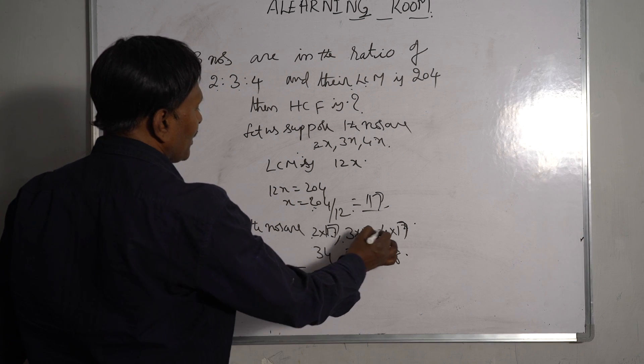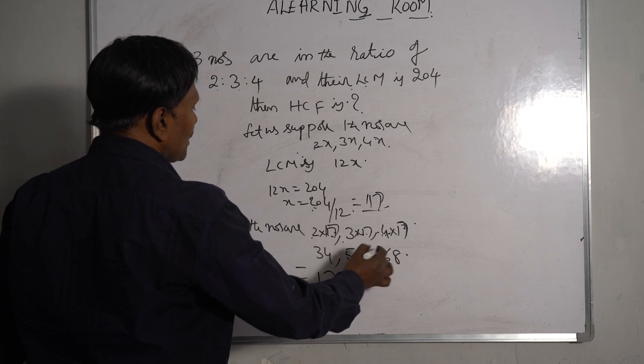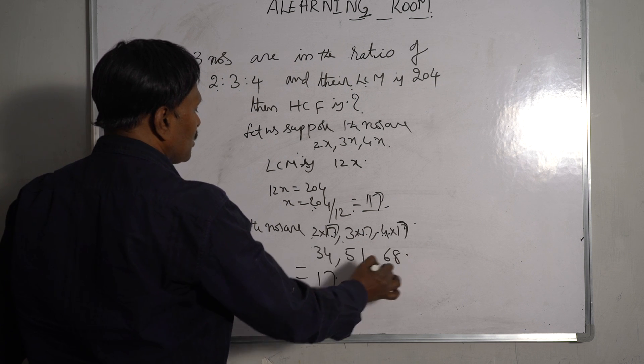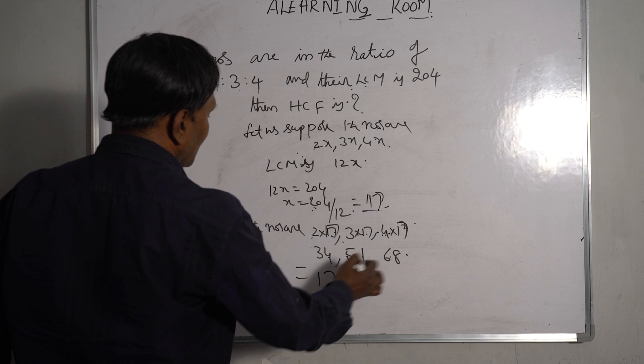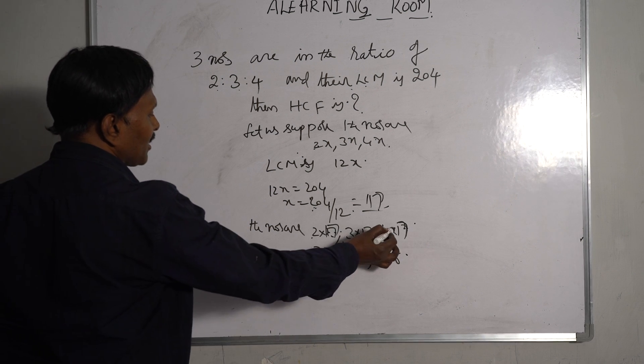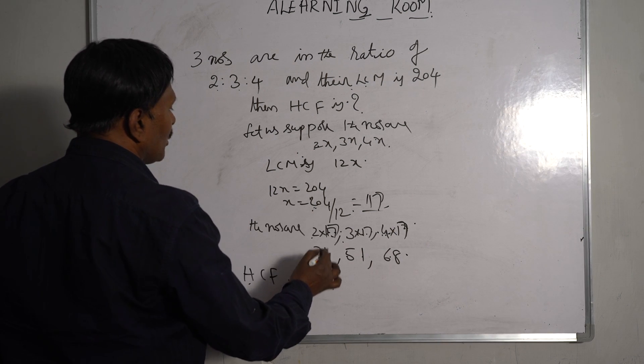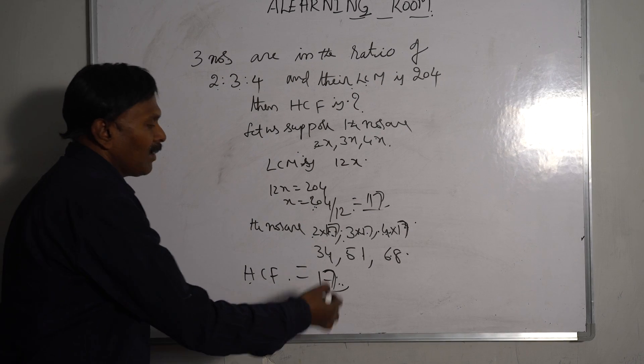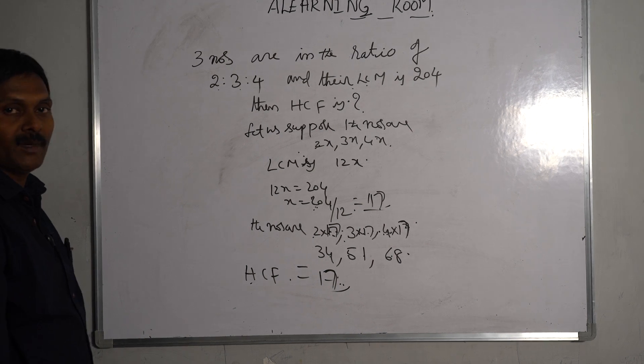These are multiples of 17. The highest common number which divides 34, 51, and 68 is 17. So the HCF of these numbers is 17. That is the answer for this problem. I hope you understood well. Thank you very much.